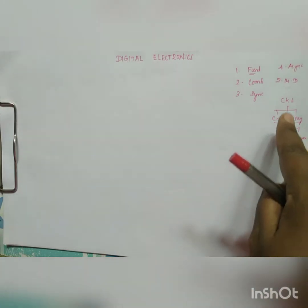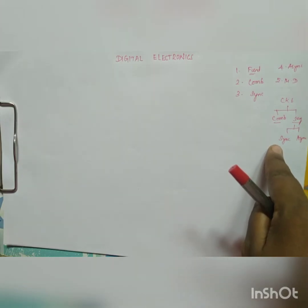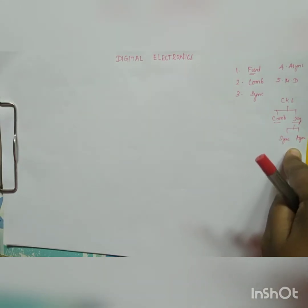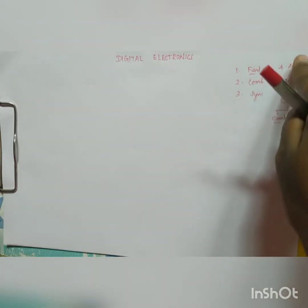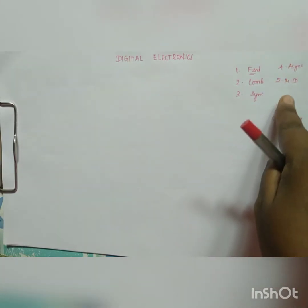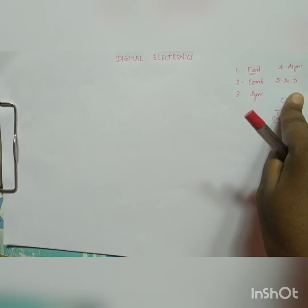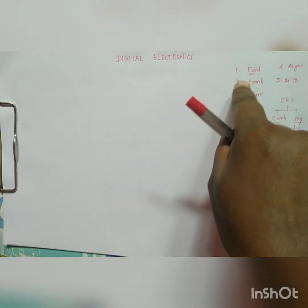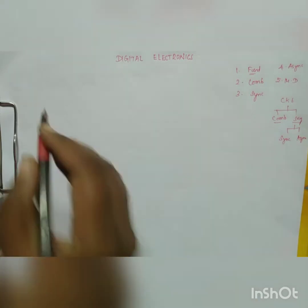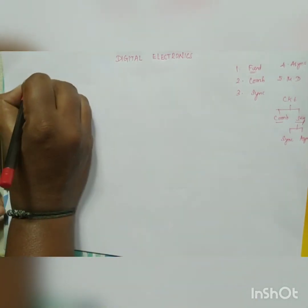Sequential circuit is again classified as synchronous and asynchronous — that is your third and fourth unit — and your fifth unit is memory devices. The first unit is fundamentals of digital electronics, and the first topic in the first unit is number system.